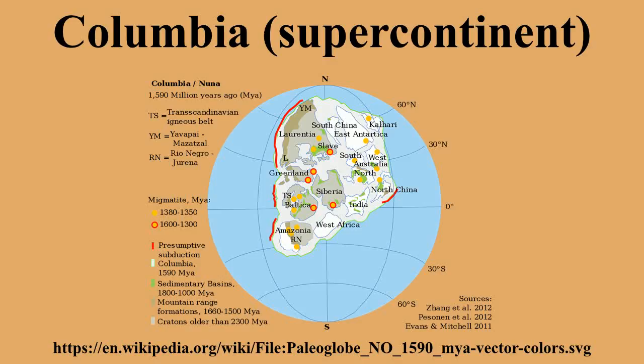Jawaal 2002 proposed that the assembly of the supercontinent Columbia was completed by global-scale collisional events during 2.1 to 1.8 Ga. Columbia consisted of protocratons that made up the cores of the continents of Laurentia, Baltica, Ukrainian Shield, Amazonian Shield, Australia, and possibly Siberia, North China, and Calaveria as well.